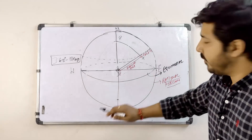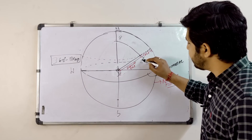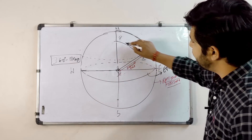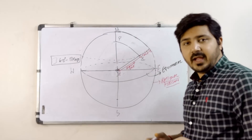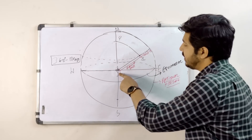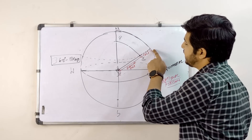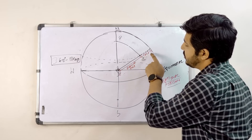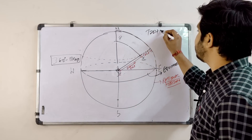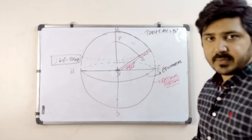Here is a body, known as X, so this is the PZX triangle which you will use frequently in your numericals. From zenith to the body is zenith distance, from the rational horizon to the body is true altitude, and TZD plus true altitude is always 90 degrees.